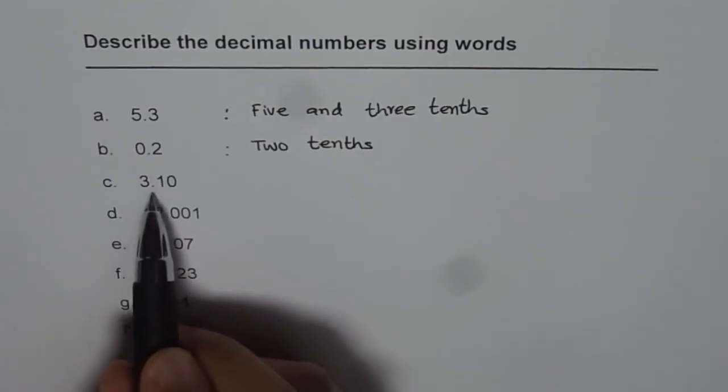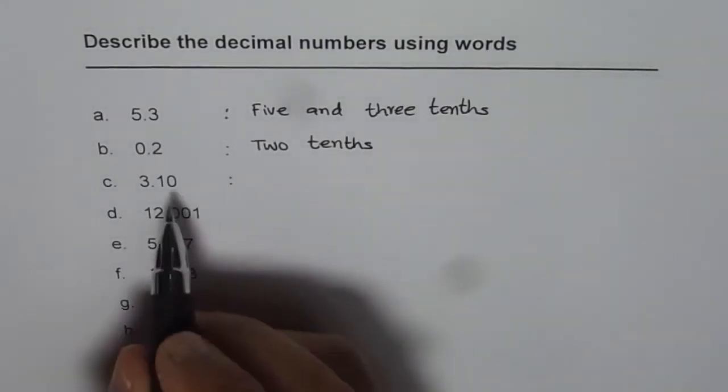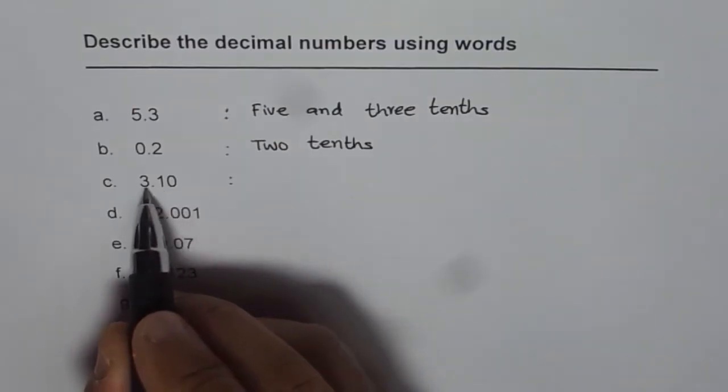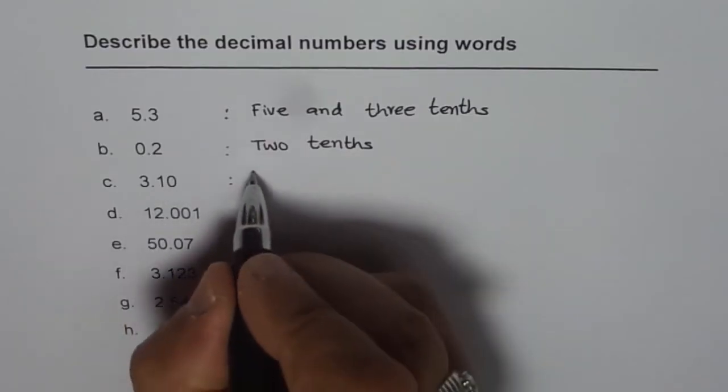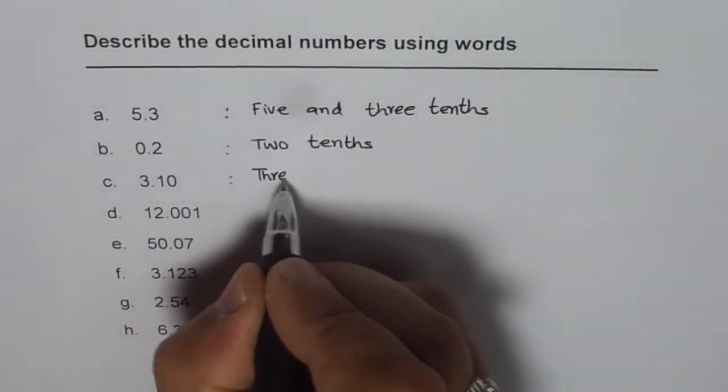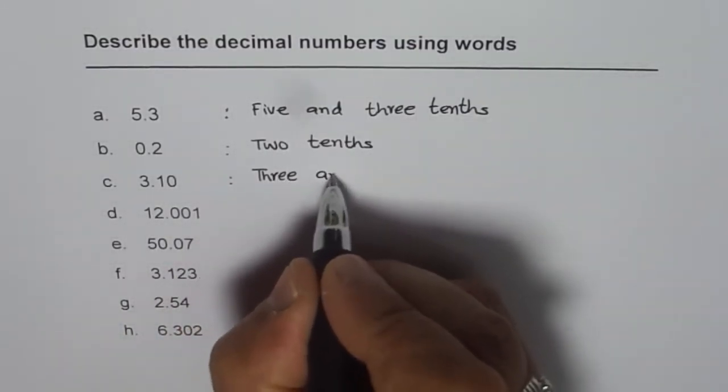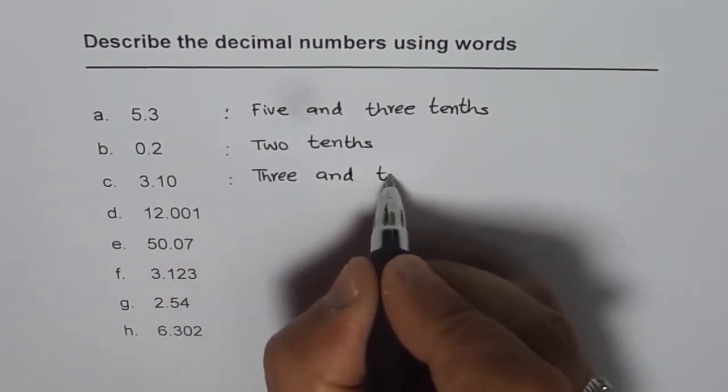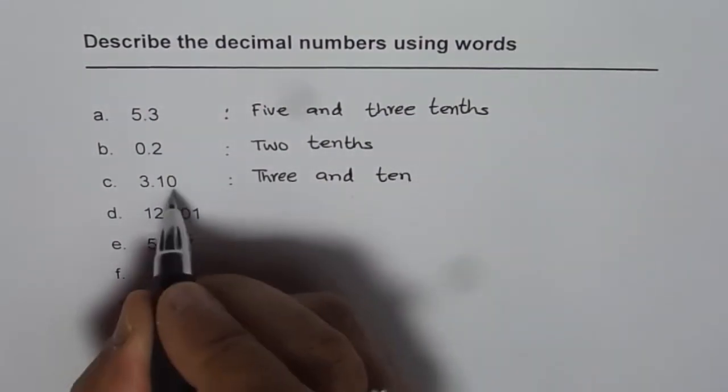And this time, 3.01 - the 1 is ending in hundredth position, ones and tenths hundredths position. And therefore, this is written as 3 and 10 hundredths, because 1 ends in hundredths position.